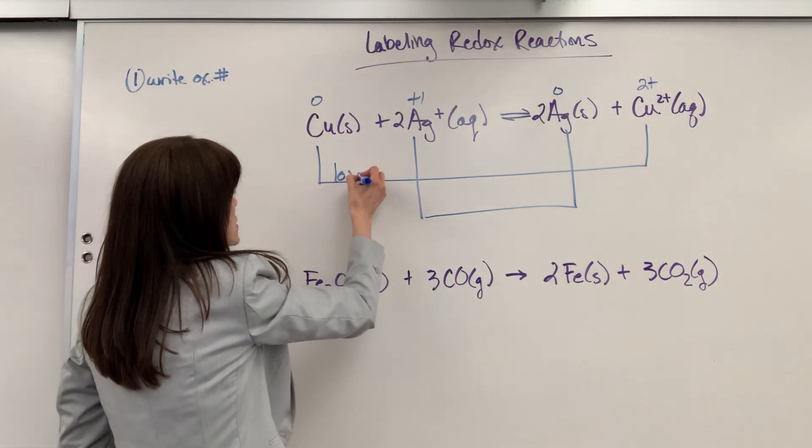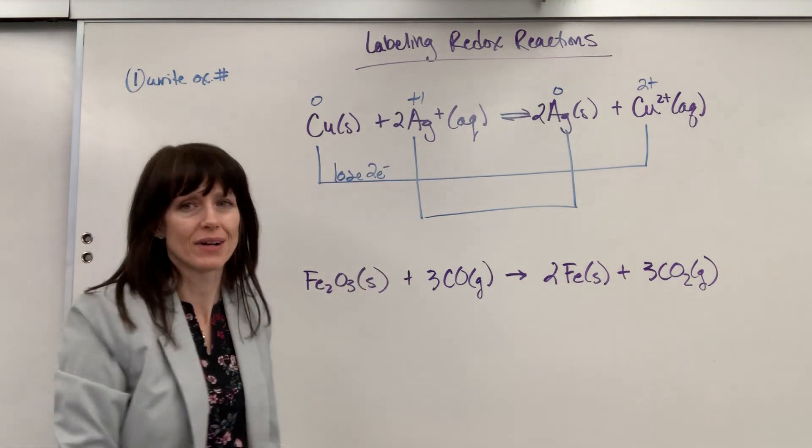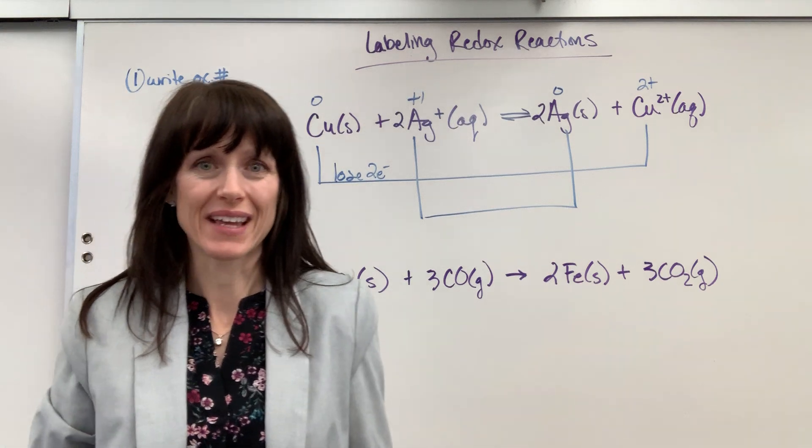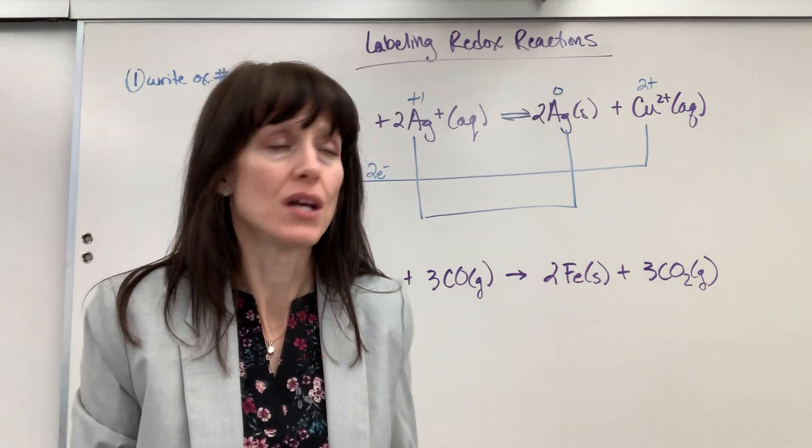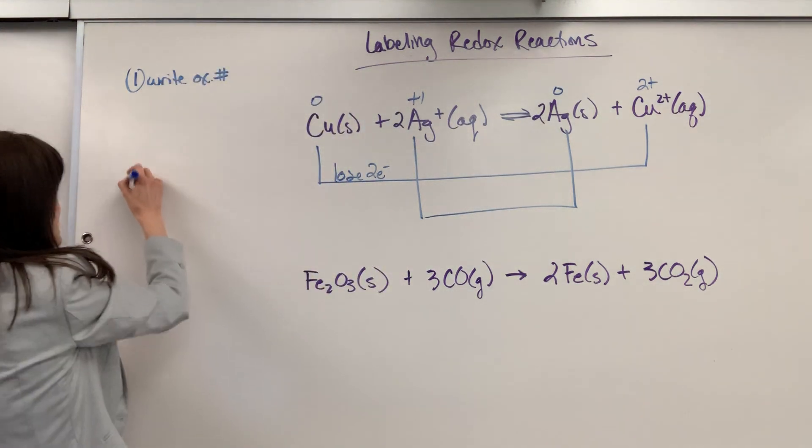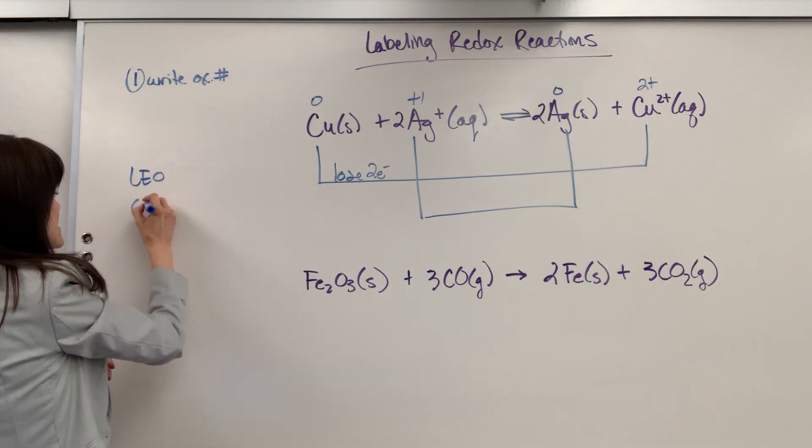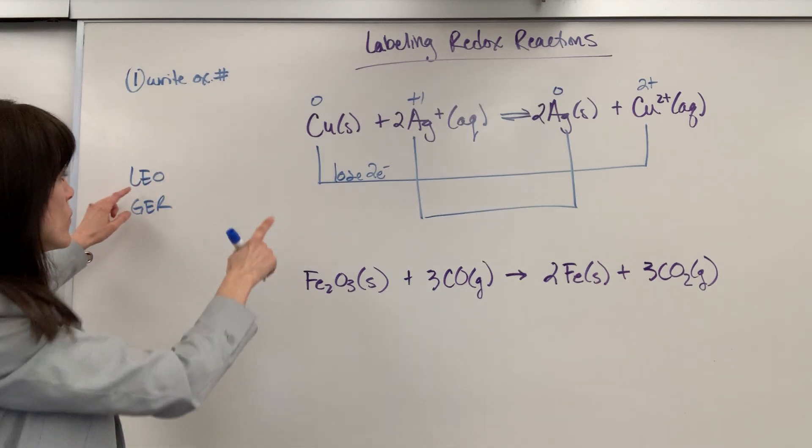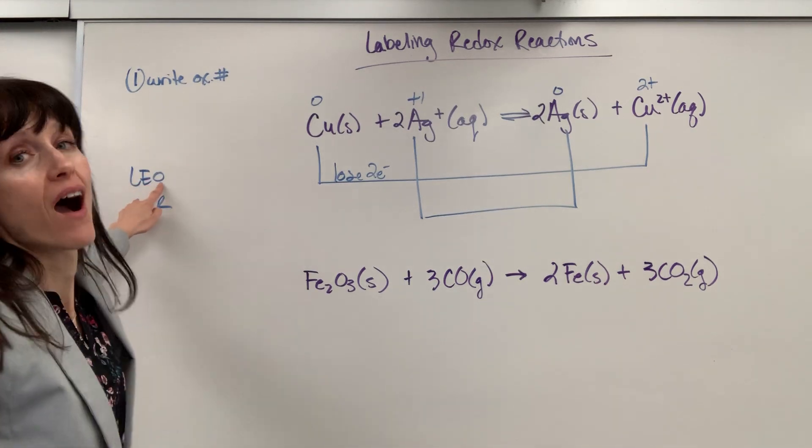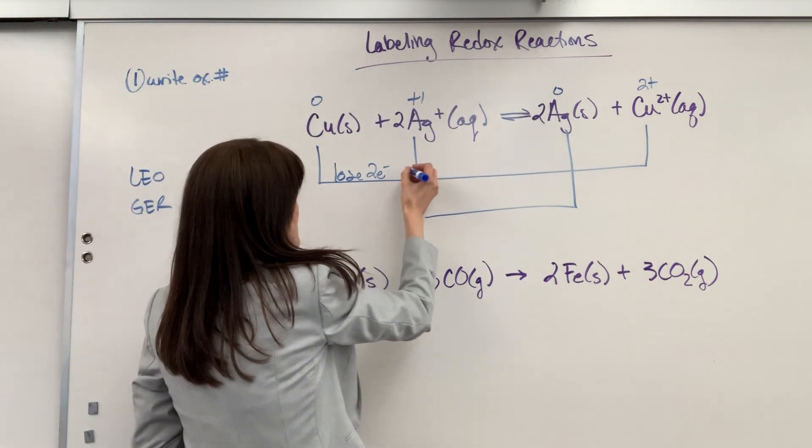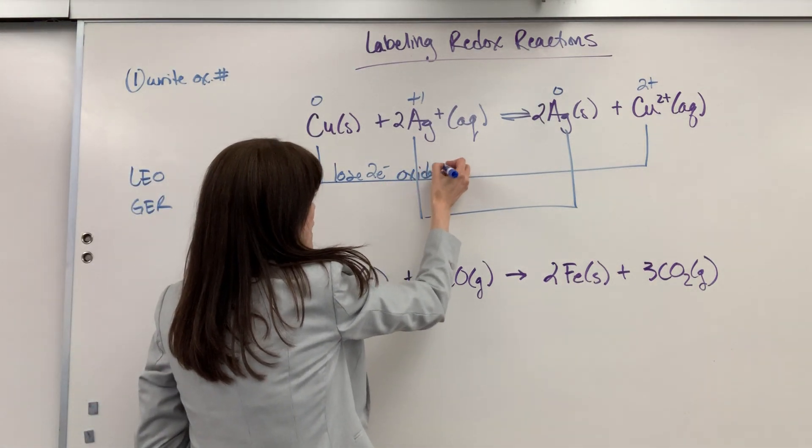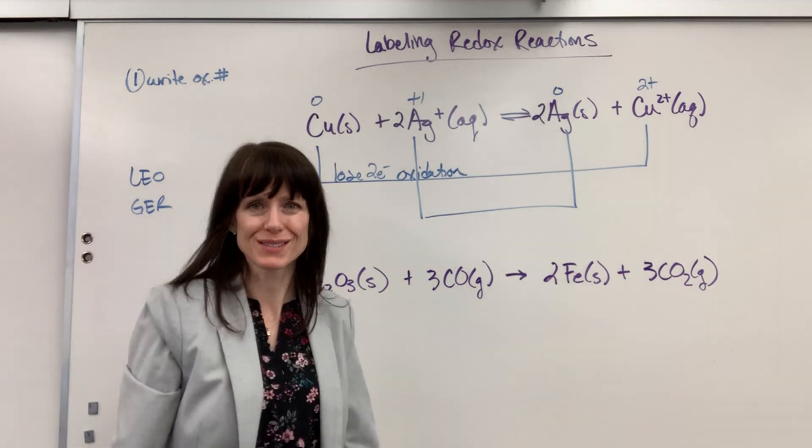So, let's write that down. Lose two electrons. Now I go to my little saying. Is this reduction or oxidation? So the saying, remember, is LEO, the lion, says GER. So we did lose electrons, oxidation. Oxidation. This is oxidation. Okay? Oxidation.